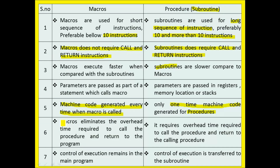Macros eliminate the overhead time required to call the procedure and return to the program, whereas procedures require overhead time to call and return to the calling procedure. Finally, the last point is: the control of execution remains in the main program for macros, whereas for procedures the control of execution is transferred to the subroutines.